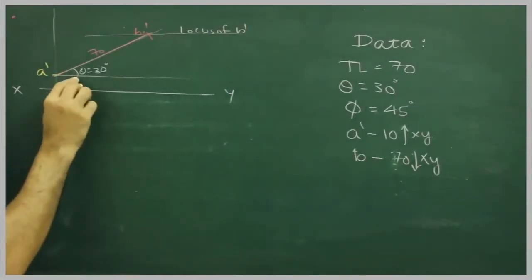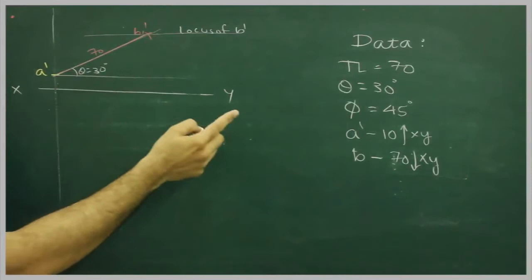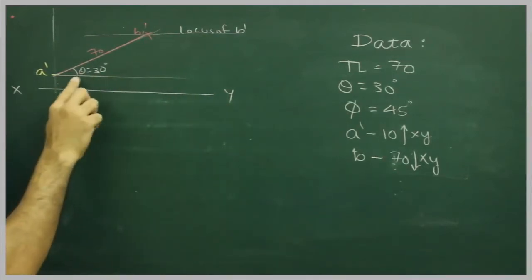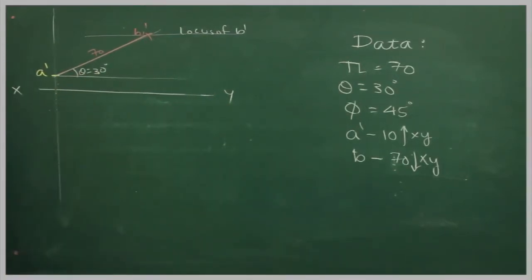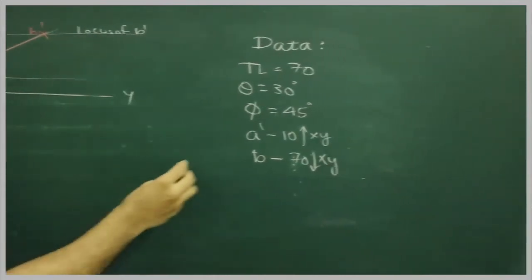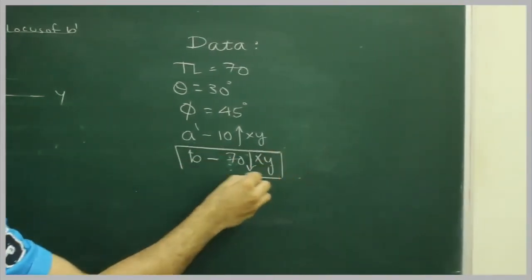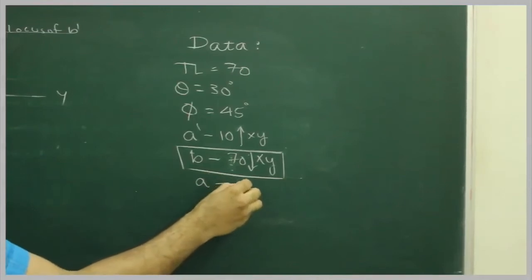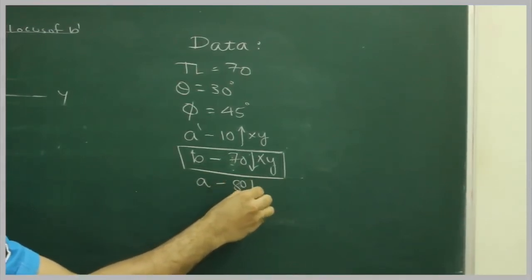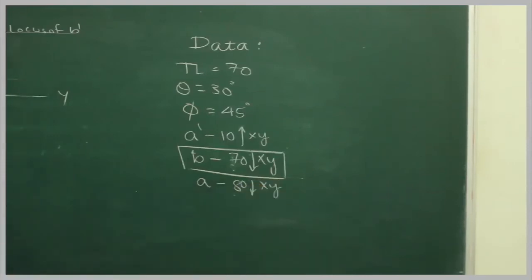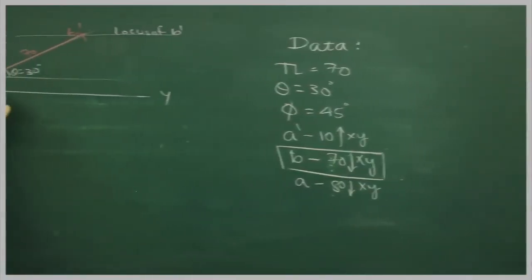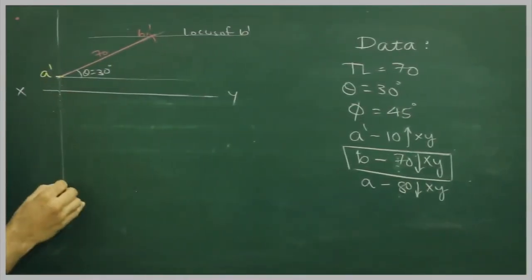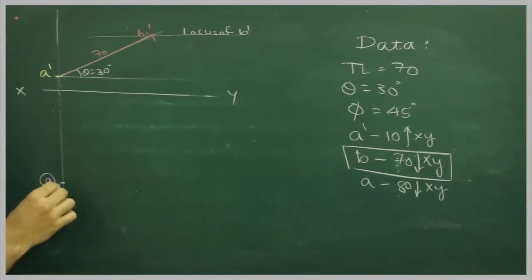Now if you see we have theta, but in the given data they have given phi as well, but we cannot use that phi. So what we will do, instead of b, we will assume a which is let's say 80 mm below XY line. So from here I will go down by 80 and I will assume a.